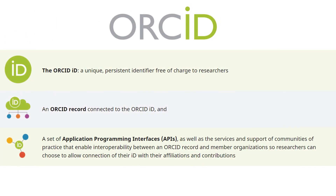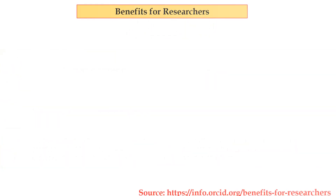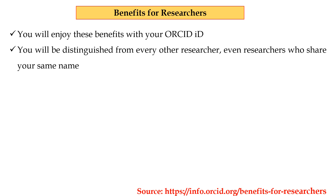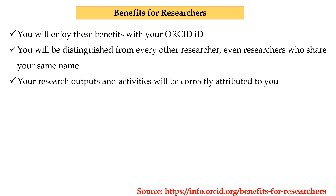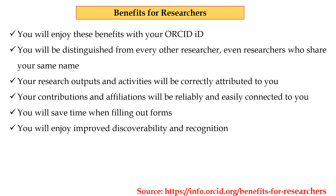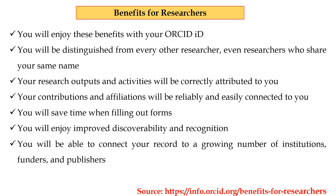The ORCID ID is a unique, persistent identifier, free of charge to researchers. It provides a set of APIs as well as services and support of communities of practice that enable interoperability between an ORCID record and member organizations, so researchers can choose to allow connection of their ID with their affiliations and contributions. Benefits for researchers: You will be distinguished from every other researcher, even those who share your same name. Your research outputs and activities will be correctly attributed to you. Your contributions and affiliations will be reliably and easily connected to you. You will save time when filling out forms, enjoy improved discoverability and recognition, and be able to connect your record to a growing number of institutions, funders, and publishers. Your ORCID record is yours, for free, forever.